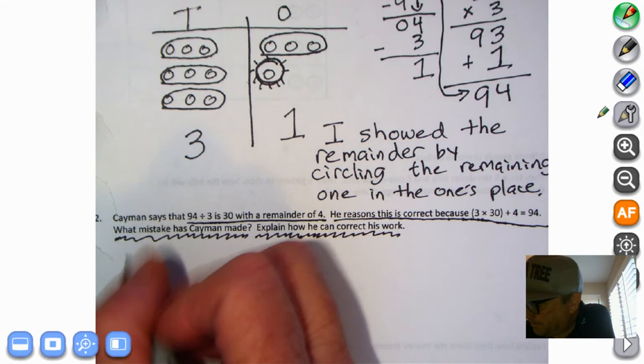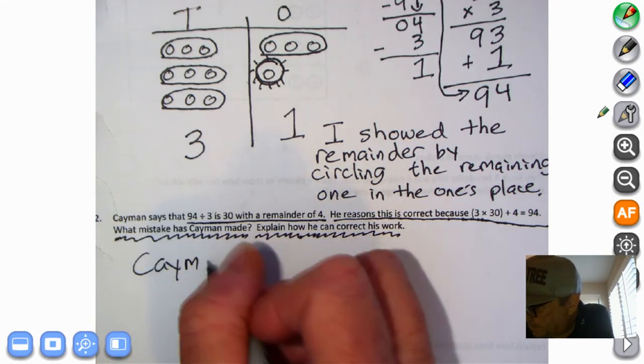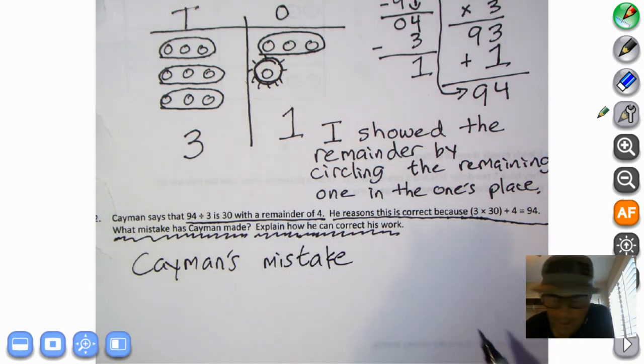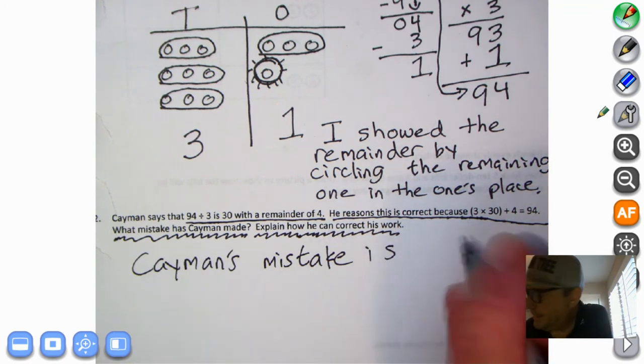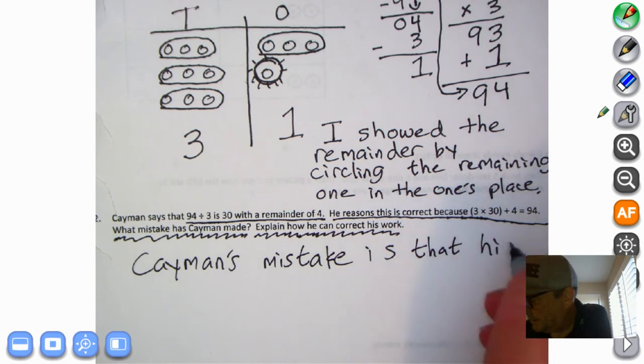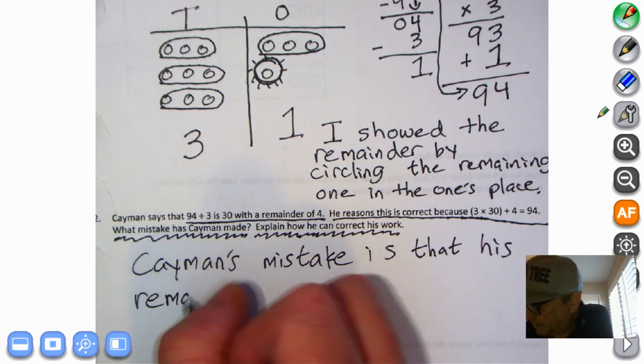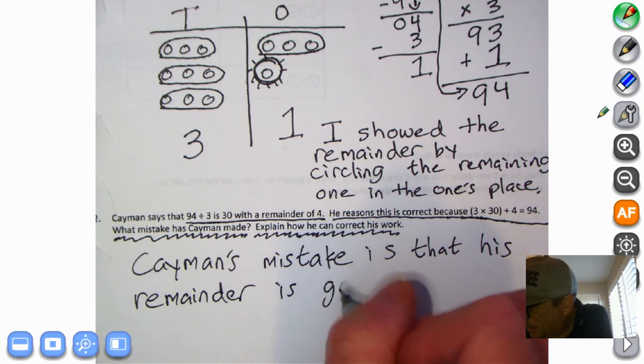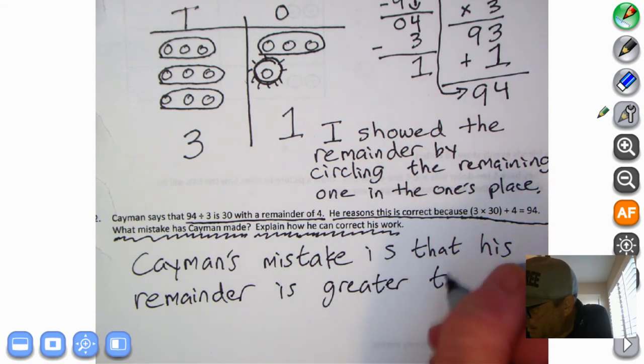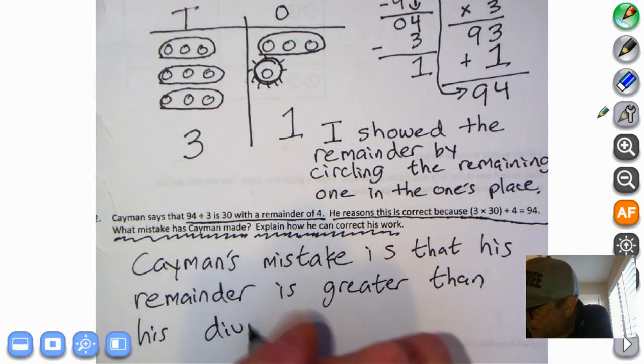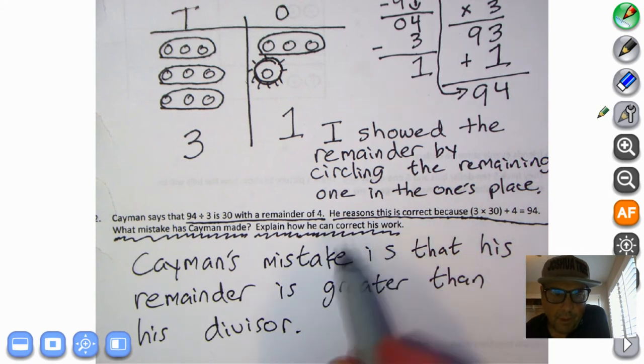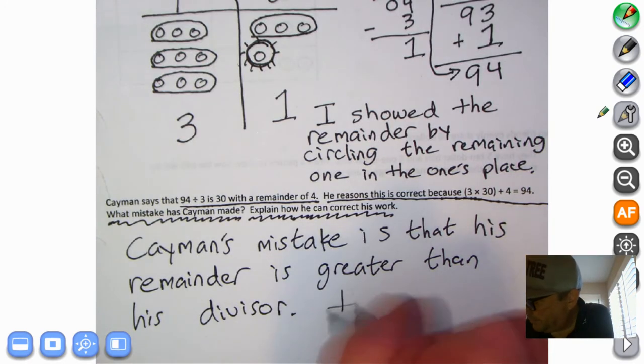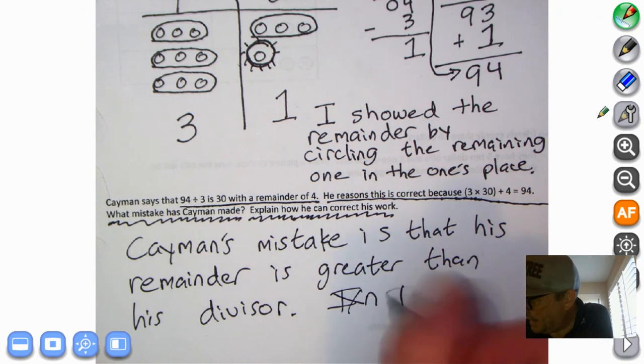What they're asking is what mistake does Cayman make, explain how he can correct his work. Well the big mistake he made is this, let's get busy writing. Cayman's mistake, and please write this down because I think it'll help you learn a thing or two, is that his remainder is greater than his divisor. Because look, he's saying up here there's a remainder of 4 but he's dividing by 3.